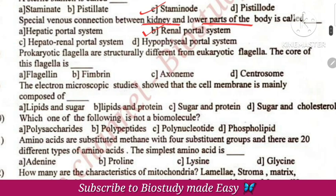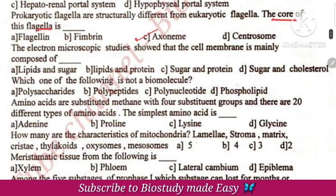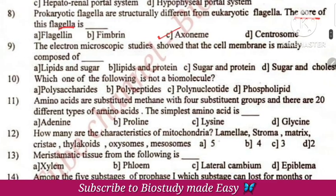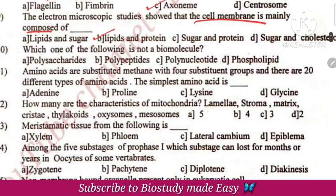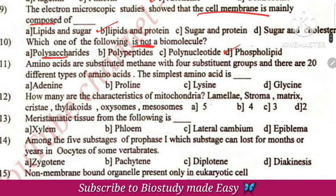Next, prokaryotic flagella — the core of the flagella is axoneme. The cell membrane is composed of lipids and proteins. These are biomolecules. Phospholipids are biomolecules. Polysaccharides are carbohydrates, polypeptides are proteins, polynucleotides are DNA or nucleic acids. So these are all biomolecules.